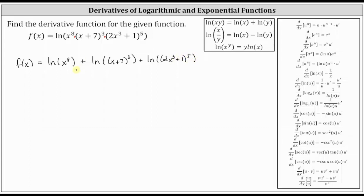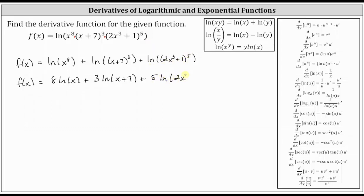Now we can continue expanding by using the power property of logarithms, which is the third property: natural log of x to the power of y equals y times natural log x. So we can move the exponent to the position of the coefficient, which means we can write f of x as eight times natural log x plus three times natural log of the quantity x plus seven plus five times natural log of the quantity two x cubed plus one.